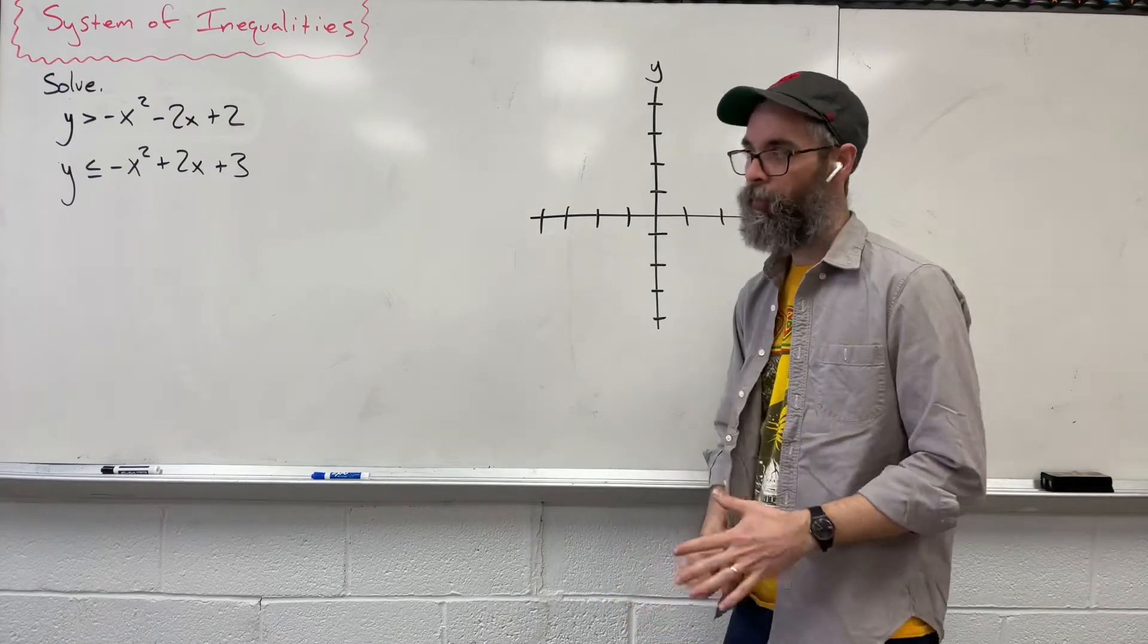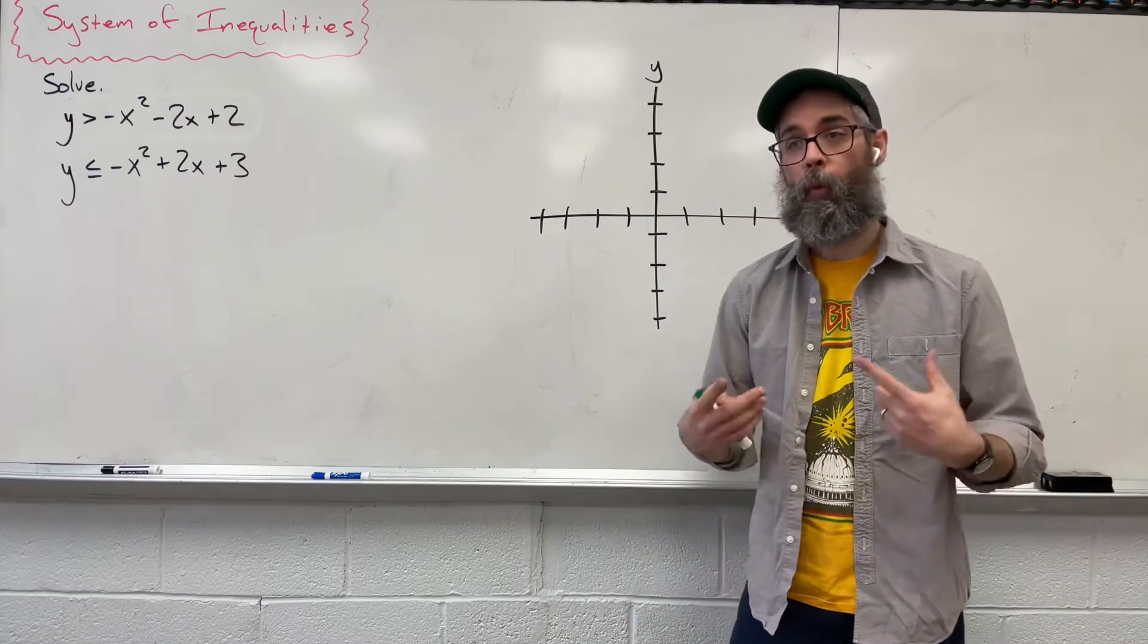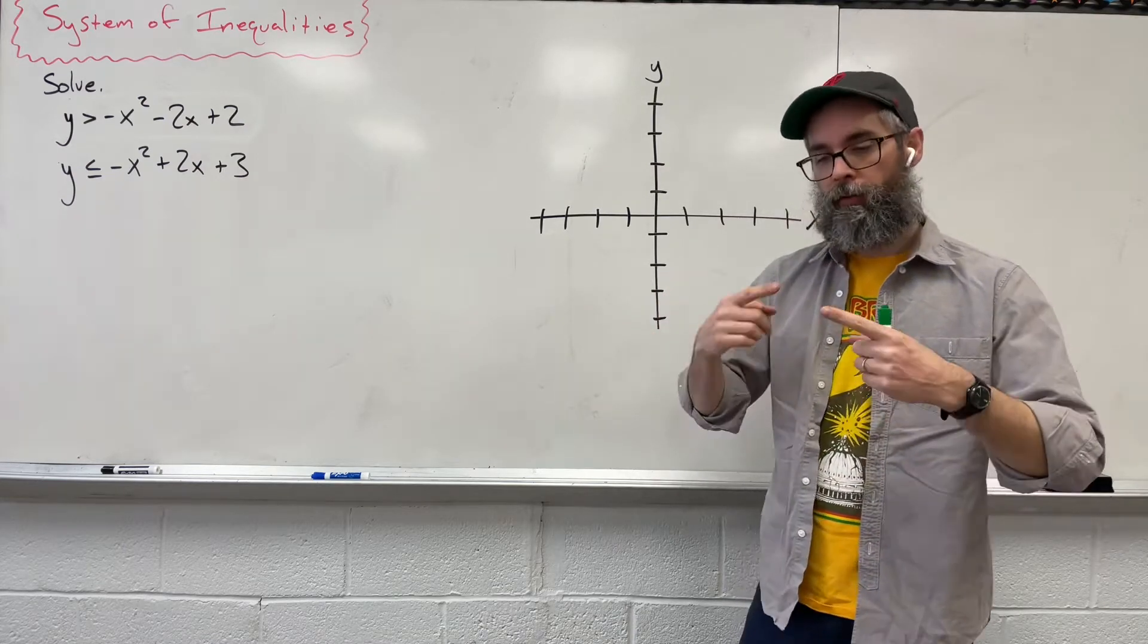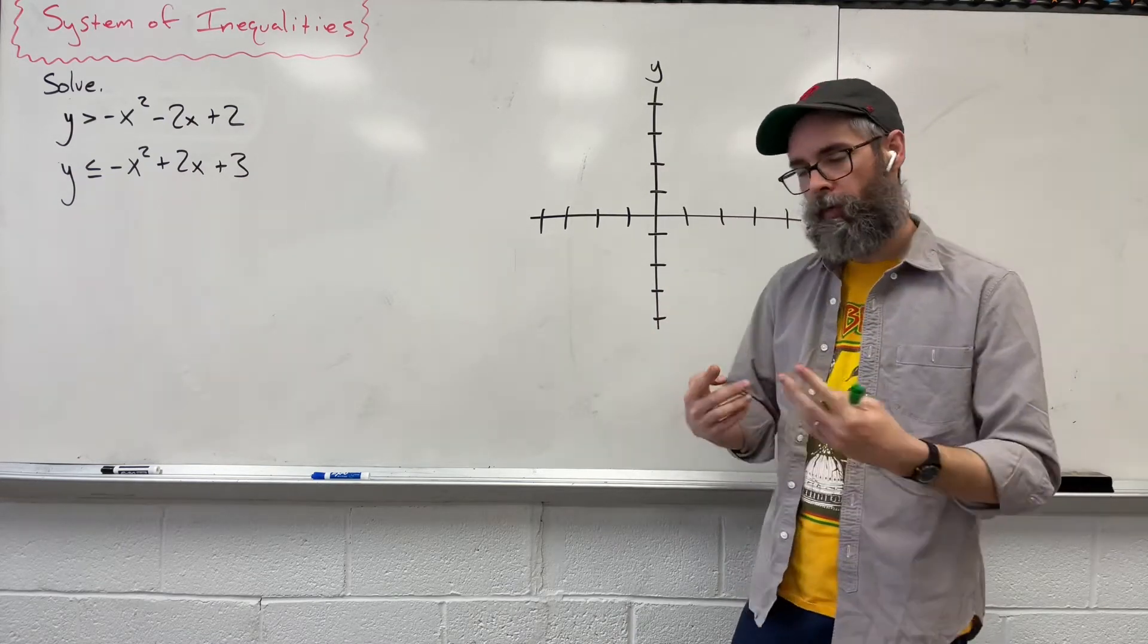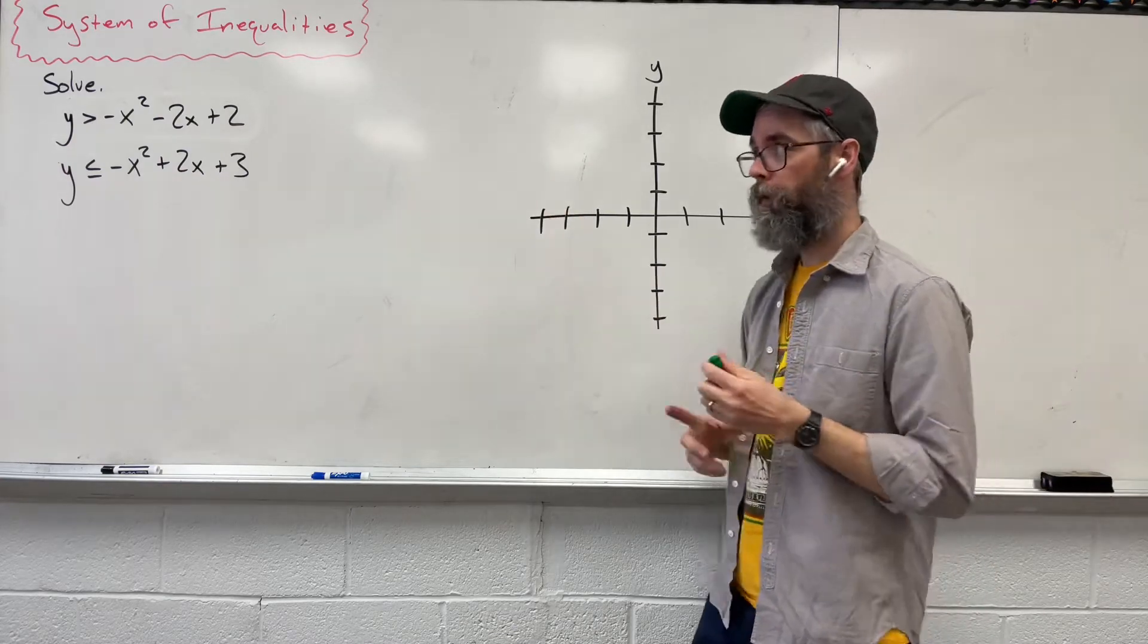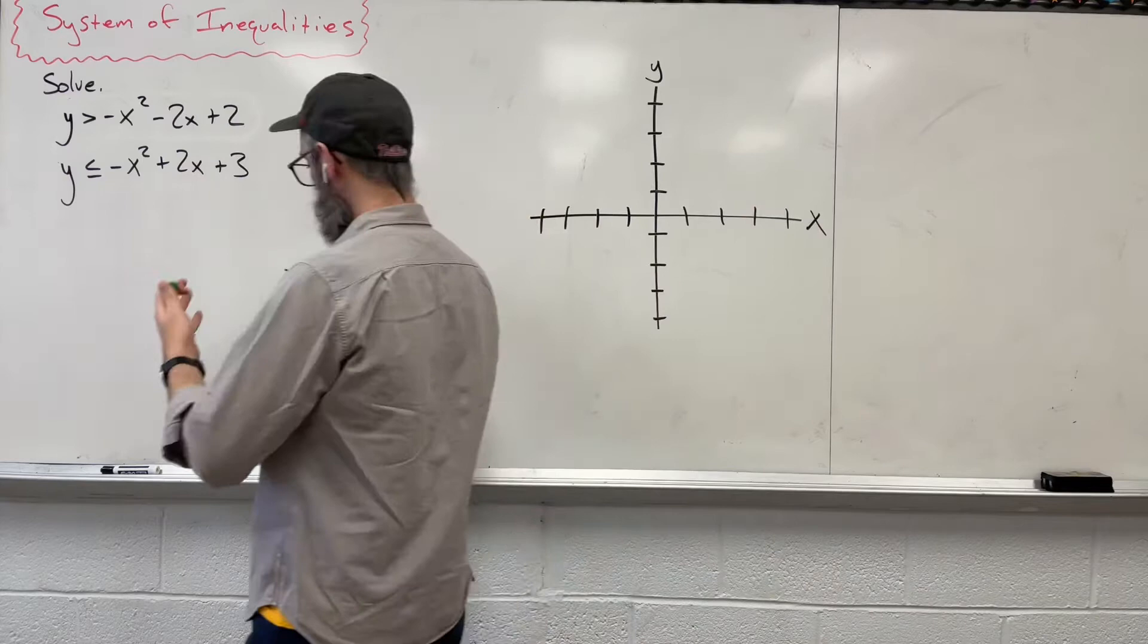Hey, we're going to look at solving a system of inequalities, system meaning more than one. With a system, we're looking for where two lines overlap. With an inequality, we're now looking for where two shaded regions overlap with each other. Because we have two, we're going to do these in two different colors.